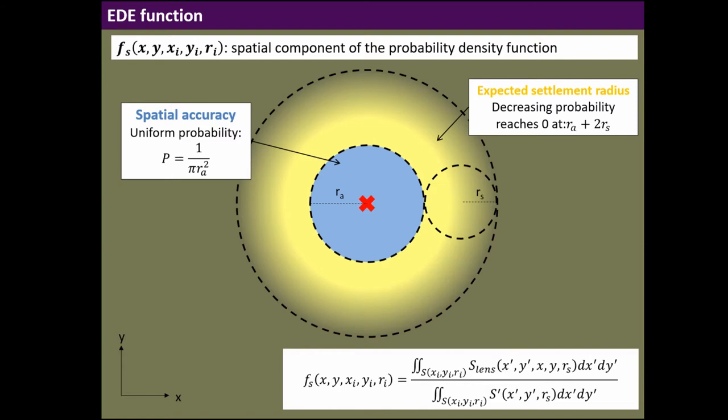This represents the probability distribution in space. The center is given by the location of the evidence. Around it we have a region of uniform probability given by the area of the radius of accuracy of the location. Then we have a region given by the size of the expected settlement. We have to, by expert knowledge, determine or plug in some expected diameter or radius of the settlement.